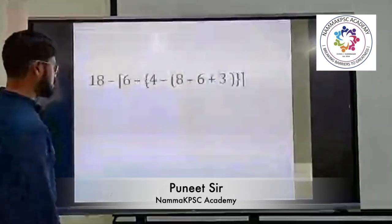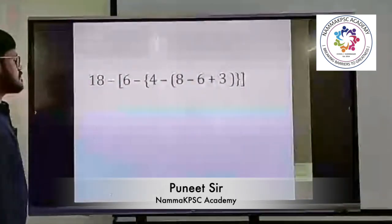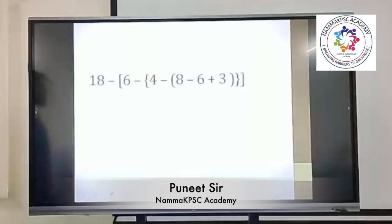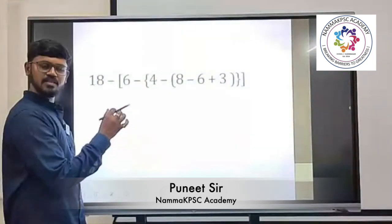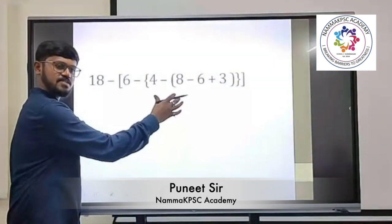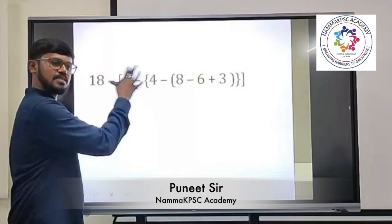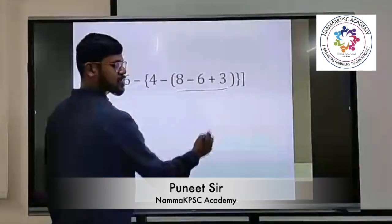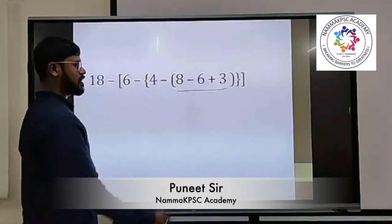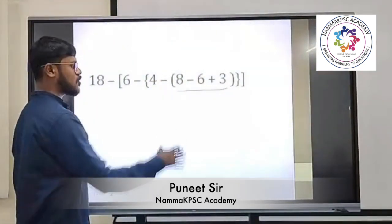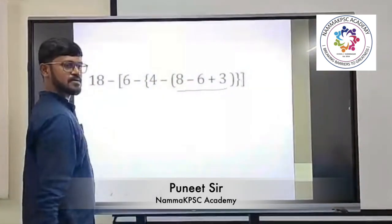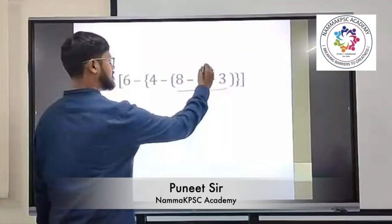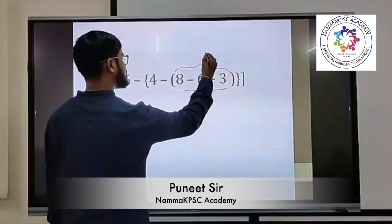Let us move to the next question. Multiple brackets are given, so whenever these brackets are given, the innermost has to be solved first, then you move to the second innermost, then the final part. The innermost is this particular equation, so let us solve it. What is 8 minus 6? That is 2. 2 plus 3 is 5, so this whole thing is nothing but 5.